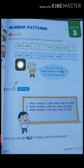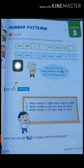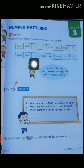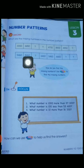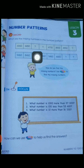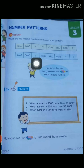You can see that in this number pattern, each two consecutive numbers have a difference of 1,000. When we subtract 1,000 from a number we get the next number. So to find the third number, we subtract 1,000 from the second number — and we get 7,460, which is the third number.